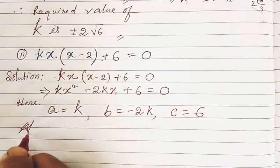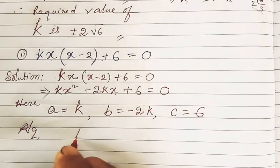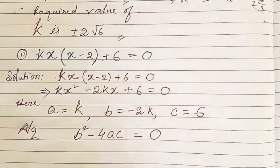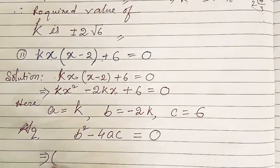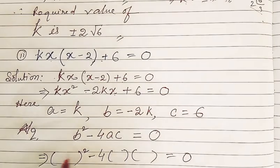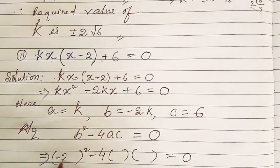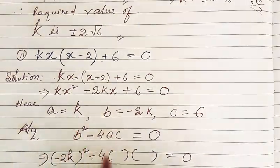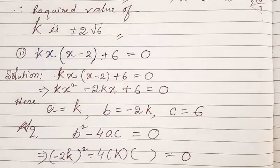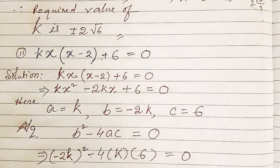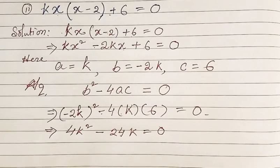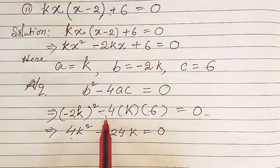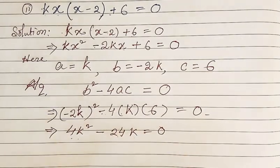Since the equation has two equal roots, b² - 4ac = 0. Substituting: (-2K)² - 4 × K × 6 = 0, which gives 4K² - 24K = 0.